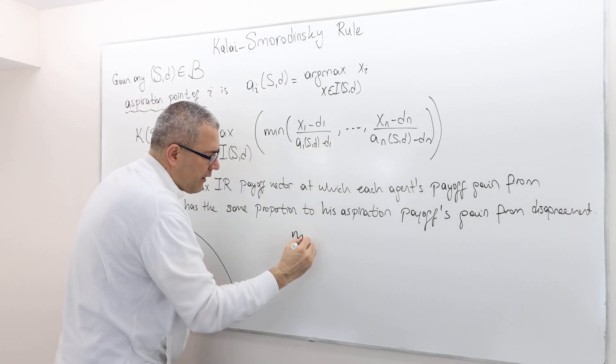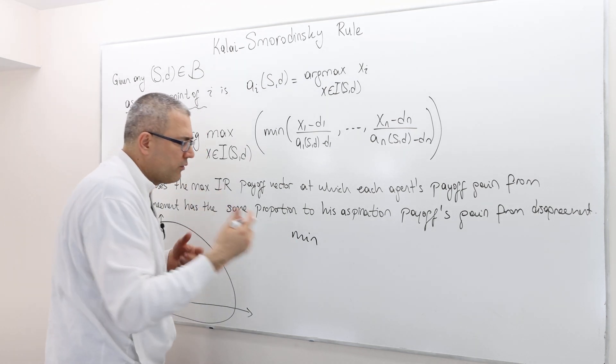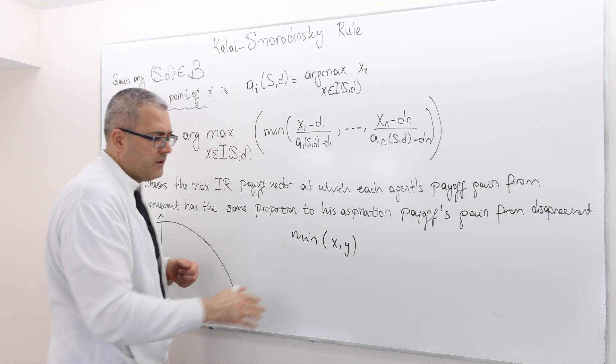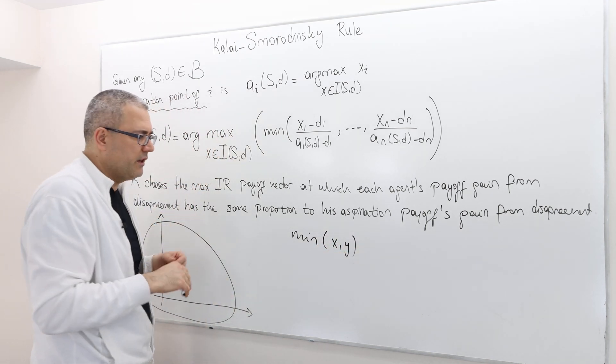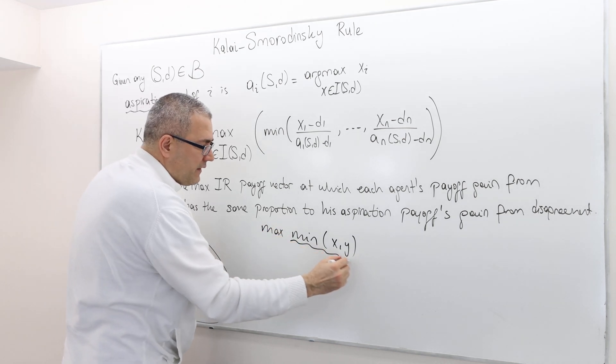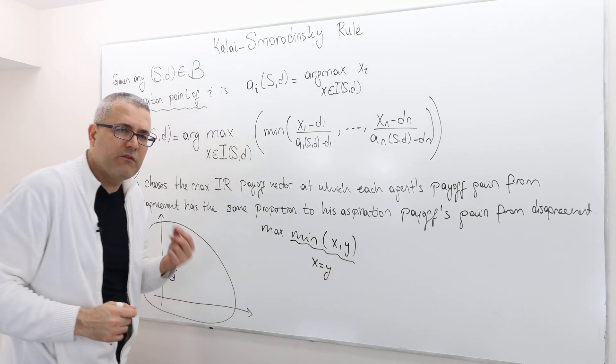Remember from utility maximization in microeconomic theory: a function like min(X,Y), where X and Y are two real numbers, when we try to maximize it, this maximization is going to occur when X equals Y.